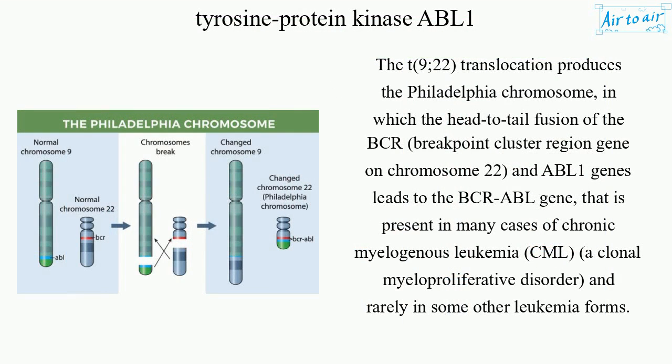The t(9;22) translocation produces the Philadelphia chromosome, in which the head-to-tail fusion of the BCR (breakpoint cluster region) gene on chromosome 22 and ABL1 genes leads to the BCR-ABL gene. This is present in many cases of chronic myelogenous leukemia (CML), a clonal myeloproliferative disorder, and rarely in some other leukemia forms.